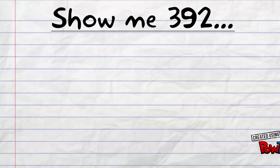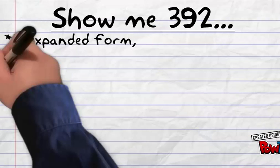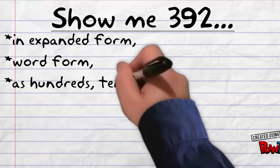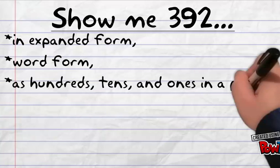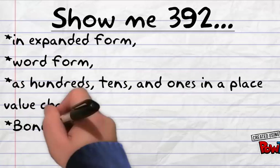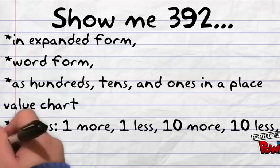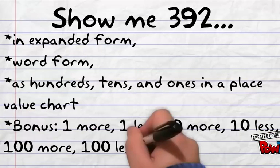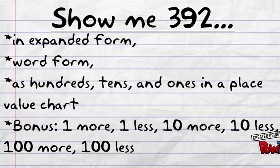Your job is to show your teacher 392 in expanded form, in word form, as hundreds, tens, and ones in a place value chart, and as a bonus question, show one more and one less than 392, 10 more and 10 less, and 100 more and 100 less. Please pause this video and show your teacher these things.